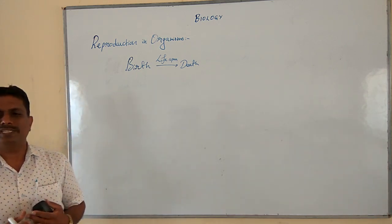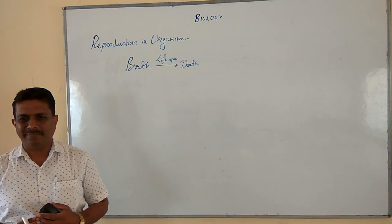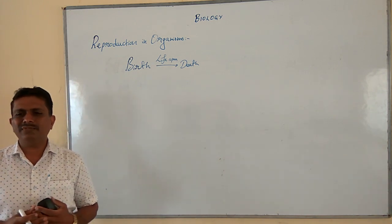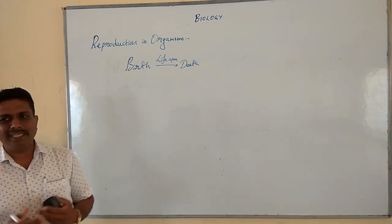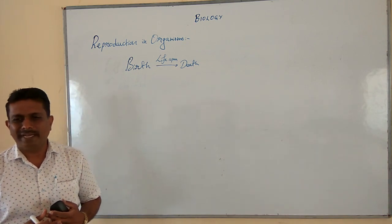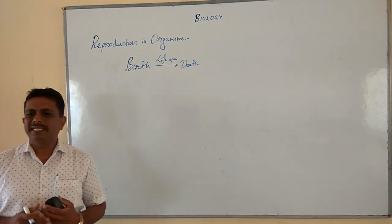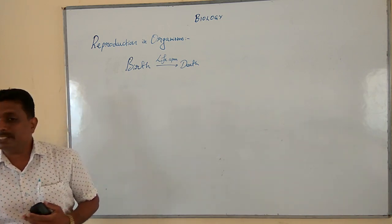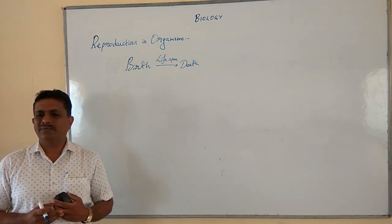Lifespan mainly varies from one day to four thousand years. There is no relationship between the size of the organism and its lifespan. For example, the size of a crow and a parrot is almost the same, but the lifespan of a crow is only 15 years, whereas a parrot can live more than 150 years. In case of plants, the mango tree has a lifespan of 200 years, and the pepper tree may exist for more than 2000 to 2500 years.